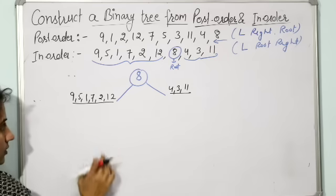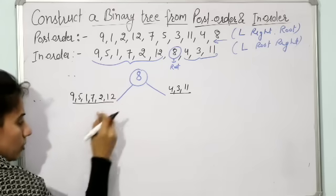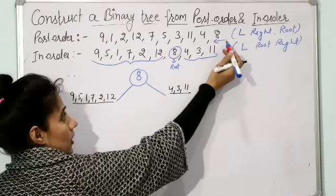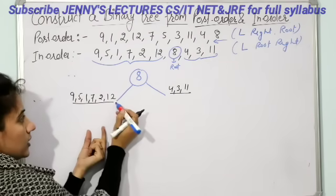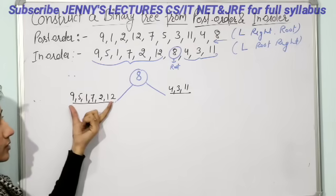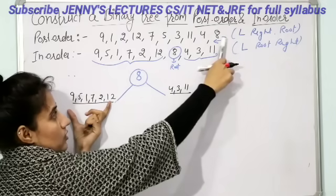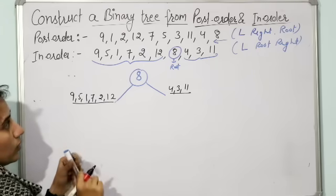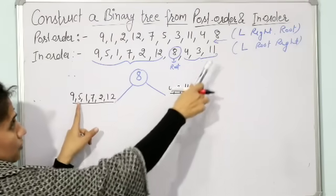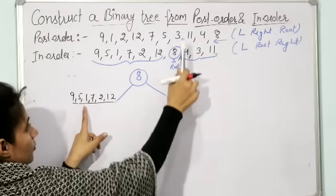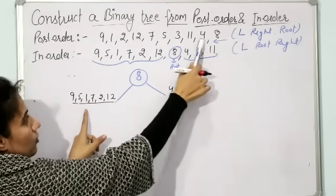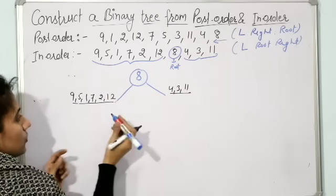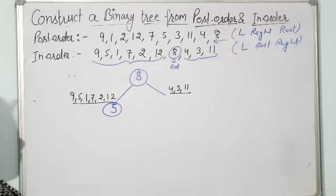Now construct the left subtree. Out of these elements, we need to find the root. The root element can only be found from post-order. Scan the post-order from right to left, and whichever of these elements — 9, 5, 1, 7, 2, 12 — appears first is the root. Scanning right to left, 5 is the first element found from this set. So 5 would be the root of this left subtree.